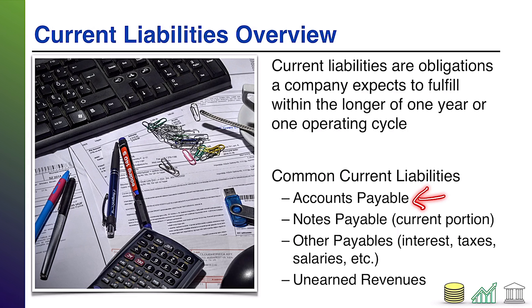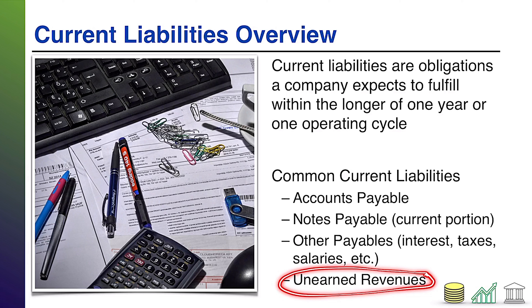Some of the common current liabilities we're going to see: accounts payable, when you owe money to your suppliers — usually that's within a year. Notes payable could be current or long-term, but the current portion goes under current liabilities. A slew of other payables: interest payable, taxes payable, salaries payable, and so forth. Pretty much anything that can be an expense can be a liability if it simply hasn't been paid yet. And then of course unearned revenues are definitely a liability — unearned revenues is where we owe a service or a product instead of money to somebody. So we're moving from the asset side of the balance sheet to the liability side, where we owe instead of we own.